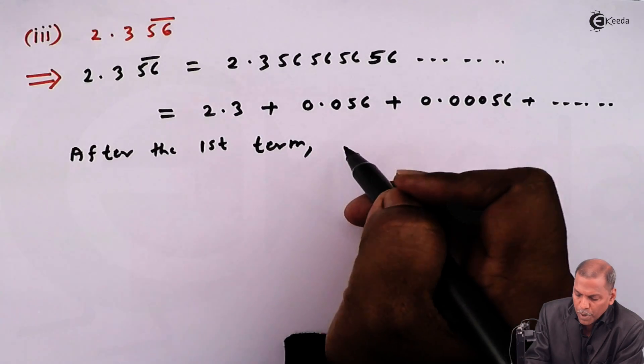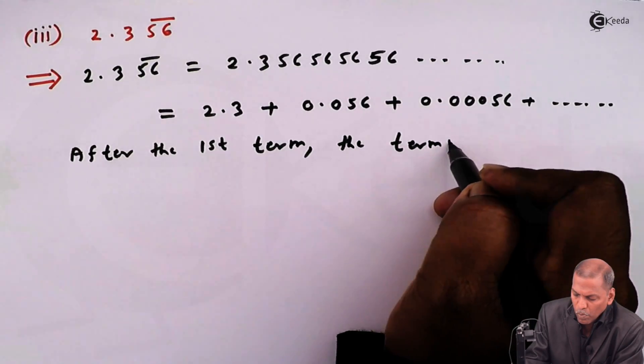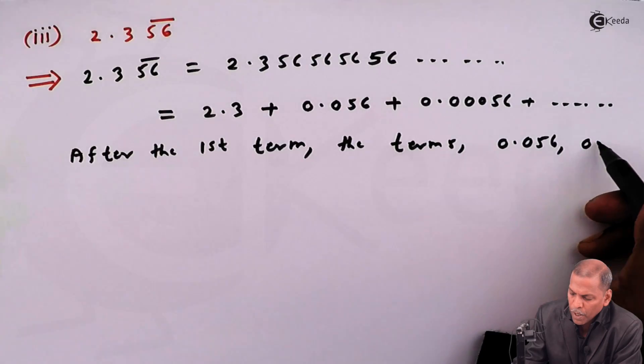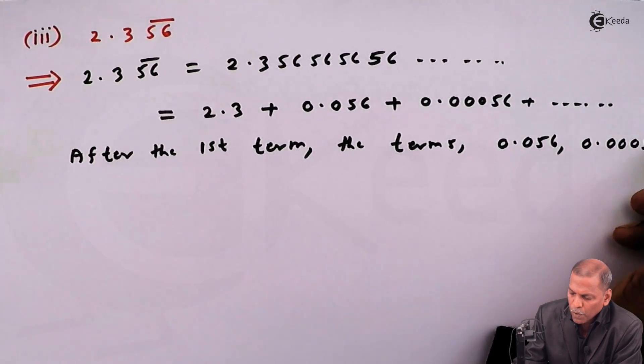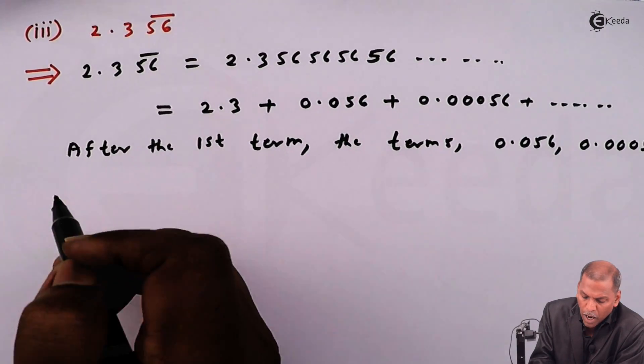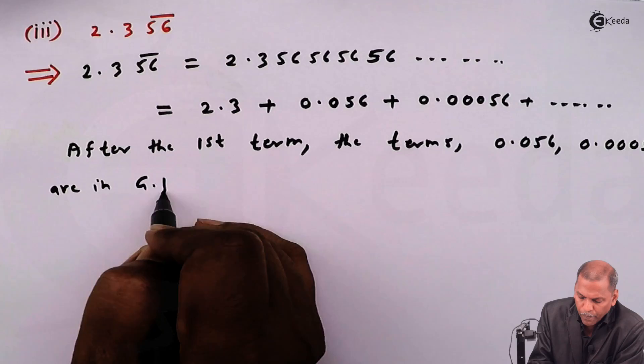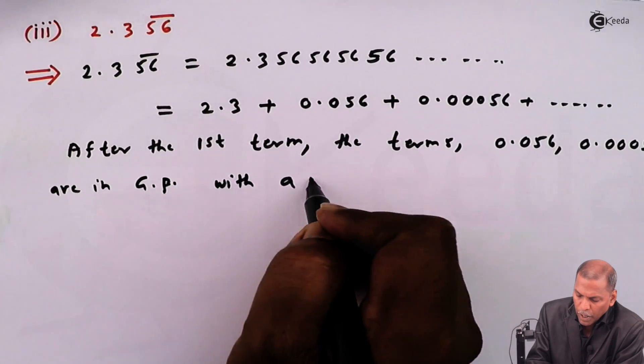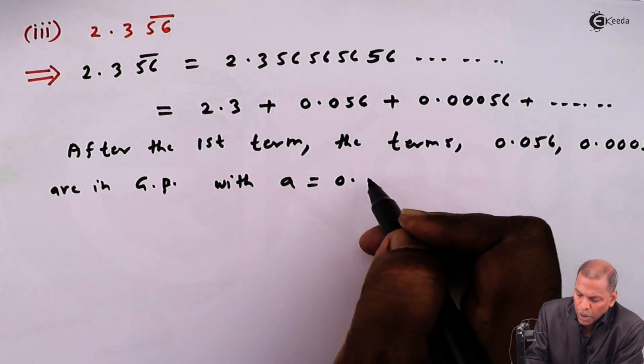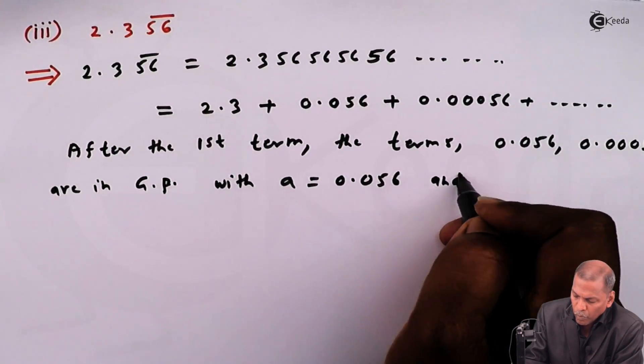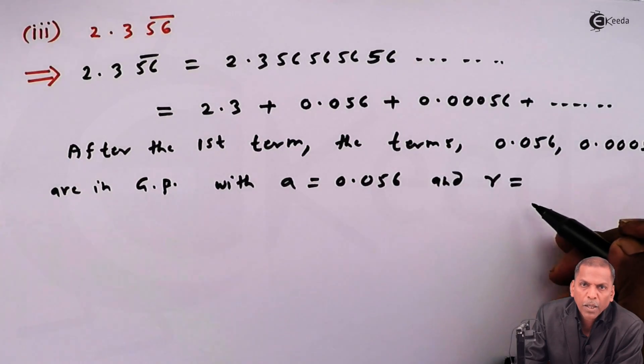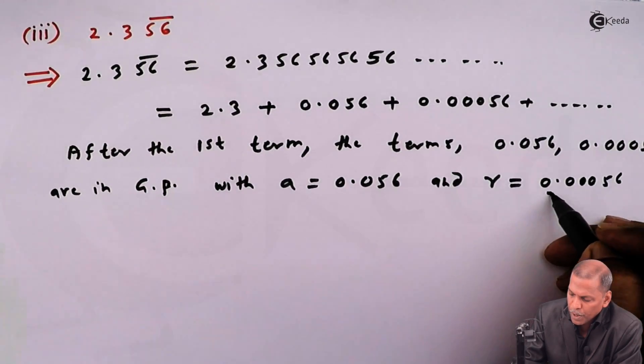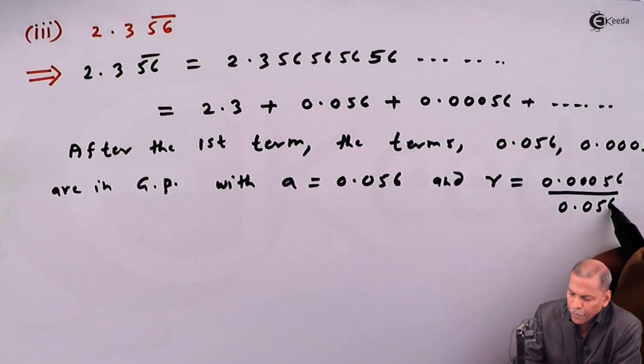Now after the first term, the terms that is 0.056, 0.00056, and going on are in GP with first term a is equal to 0.056 and common ratio r is equal to 0.00056 divided by 0.056.